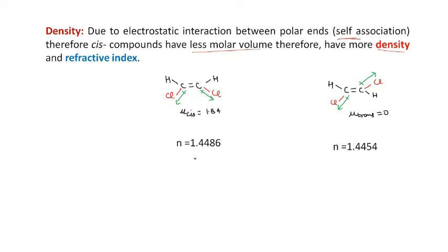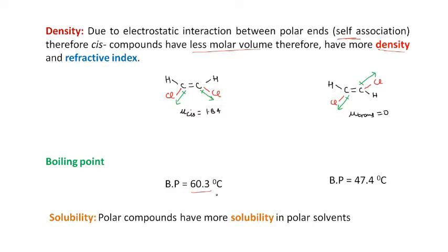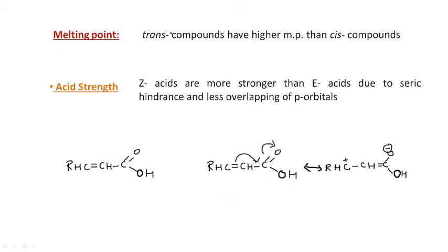Due to self-association, more energy is required to break it, so the boiling point of the cis compound is higher than the trans compound. Due to the more polar nature of cis compounds, they have greater solubility than trans compounds in polar solvents. Regarding melting point, the literature states that trans compounds have a higher melting point than cis compounds.